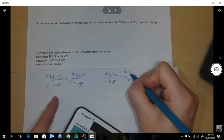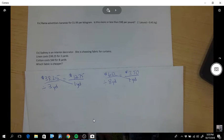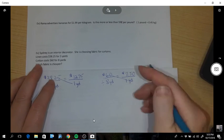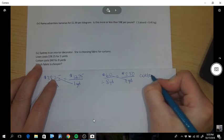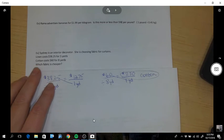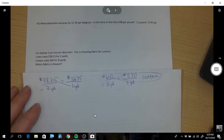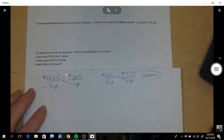And the last one there, $60 divided by eight is $7.50 per yard. So which fabric is cheaper? Your answer would be cotton. Okay, that's unit price 5.1.